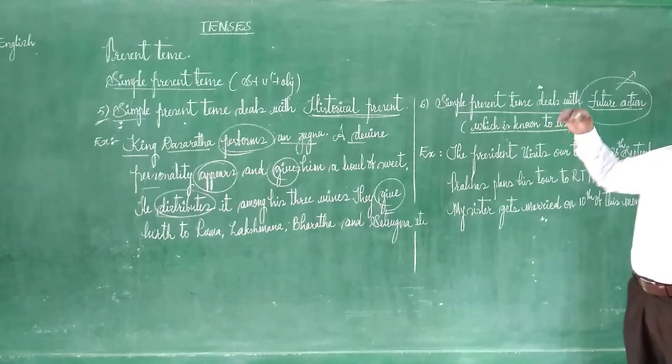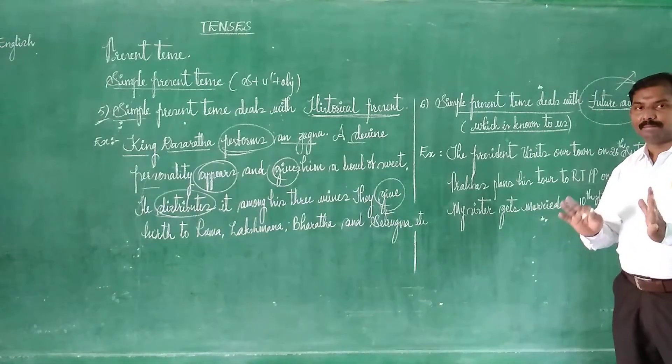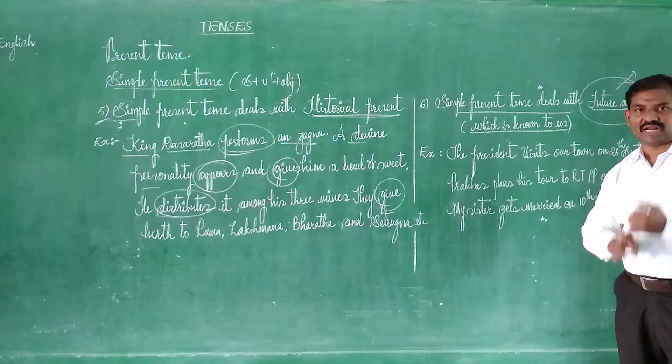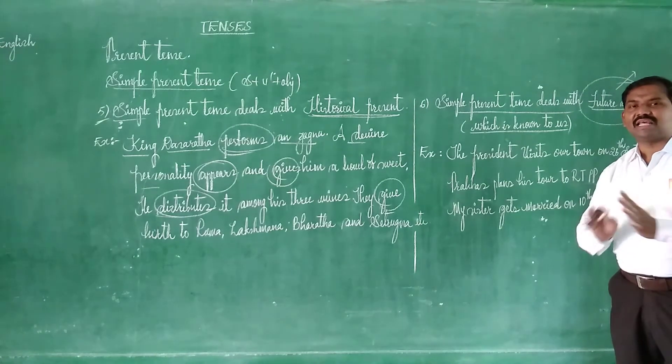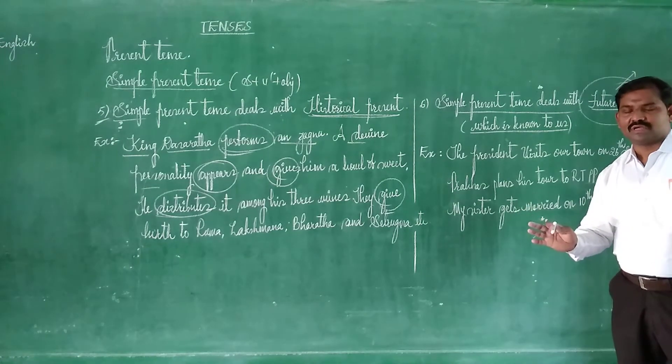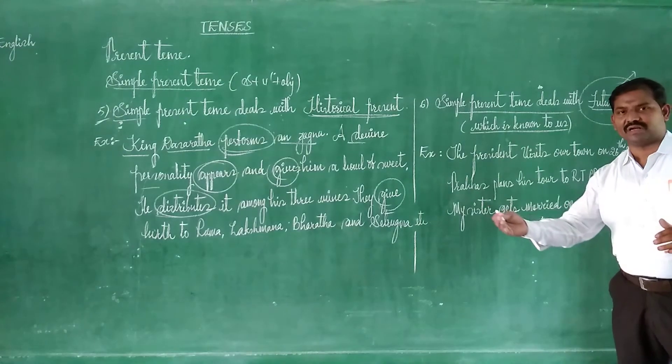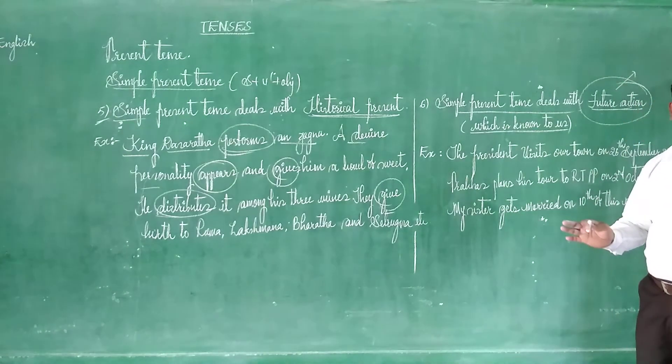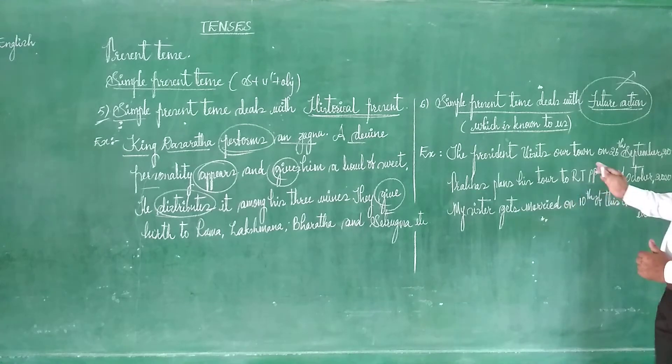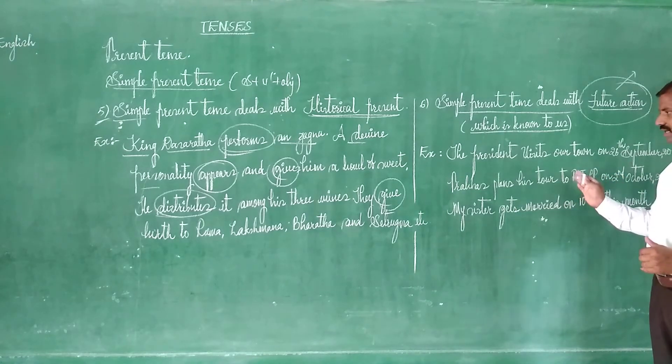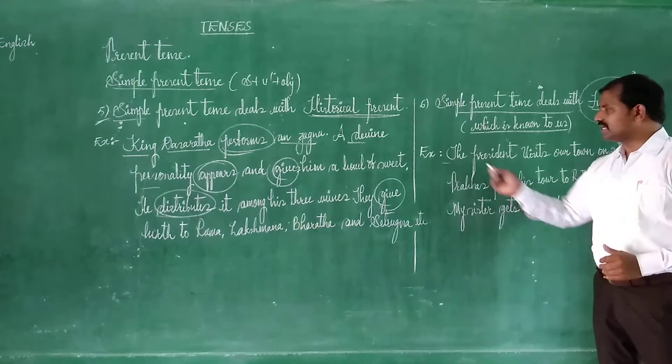So that particular action you can write in the simple present tense. Anything that will happen in the future, that you understand. But it must be known to us now. Nothing but what else, there are some fixed programs. Whenever you talk about some fixed programs of future, that particular fixed programs you can discuss in the simple present tense. Now you can look at the three examples I have given.